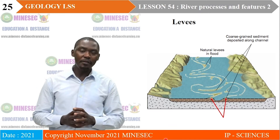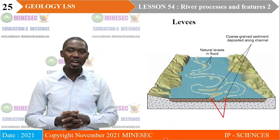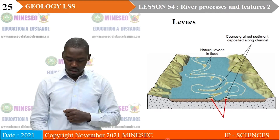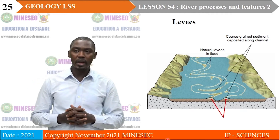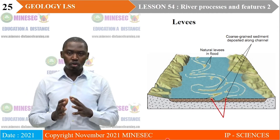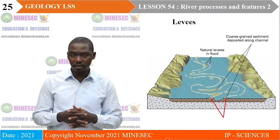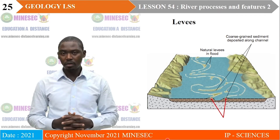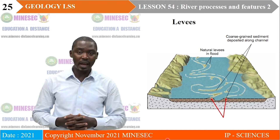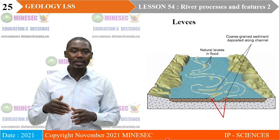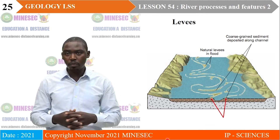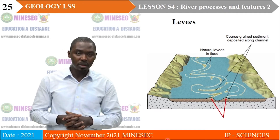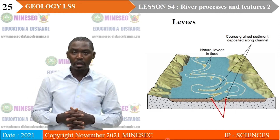Levees are banks of sediment deposited at the edge of a river's bank. During flood periods, the excess water leaving the river's channel carries both coarse and finer sediments. When the water leaves the channel, the coarser sediments accumulate at the lip of the river's bank because of their size and weight, while finer material is carried to the floodplain. A repetition of this process builds a narrow bank of coarse sediments that tends to extend the river's bank upward. Such features are temporal because subsequent flooding can break through the banks.